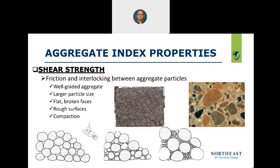Shear strength is friction and interlocking between aggregate particles. Natural gravel has rounded faces; manufactured crushed gravel has angular faces. Think of throwing marbles on the floor — they roll everywhere and there's no friction. But if you break those marbles into pieces, they won't roll and you won't slip. That's why we want crushed gravel: to create angular faces that produce friction and interlocking.